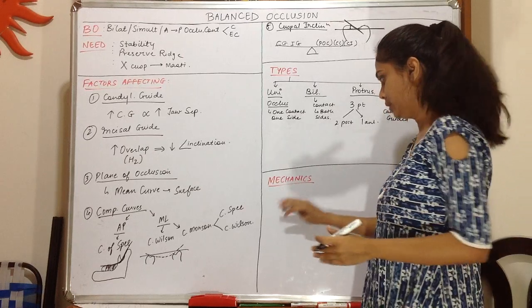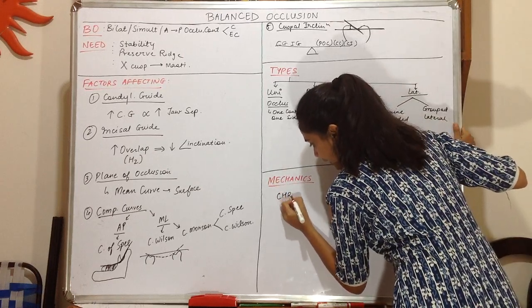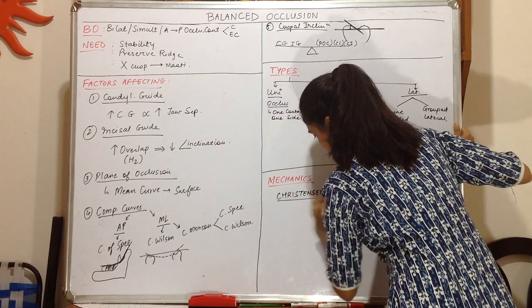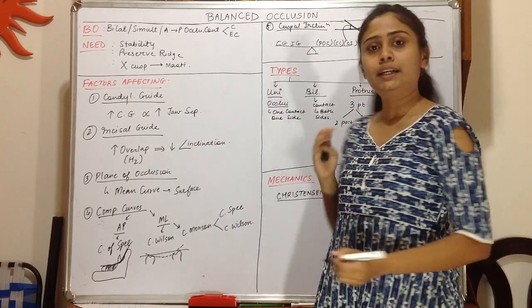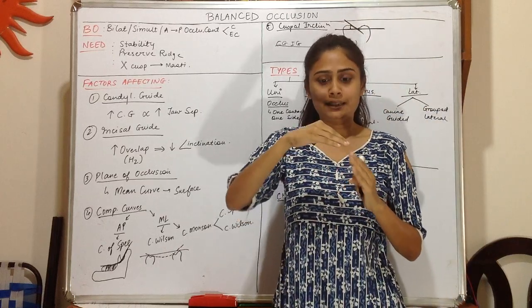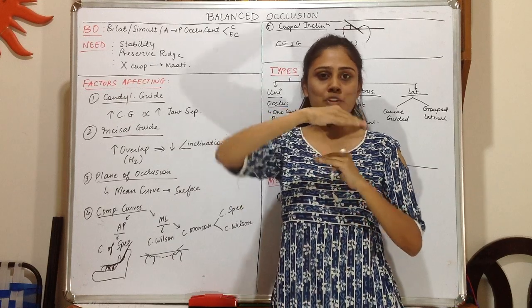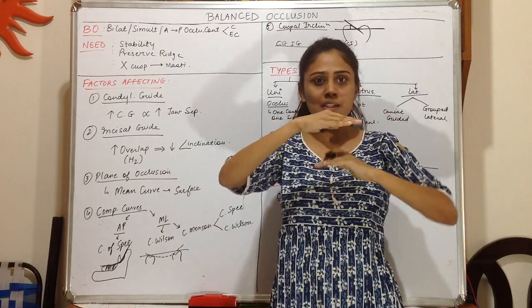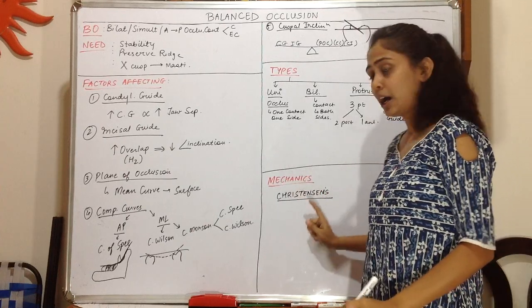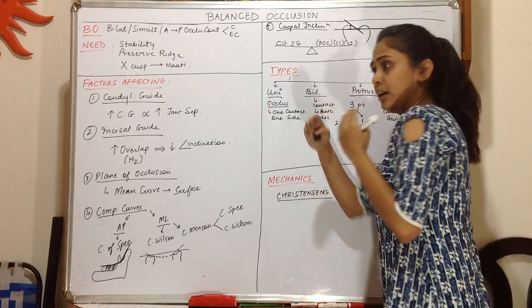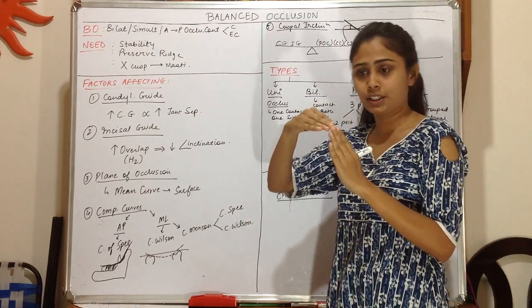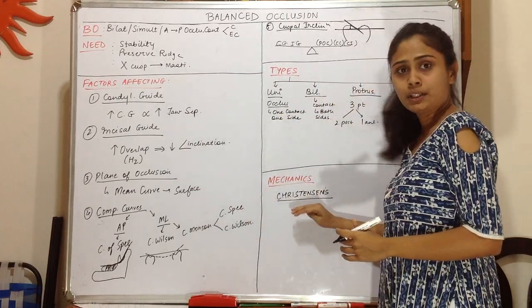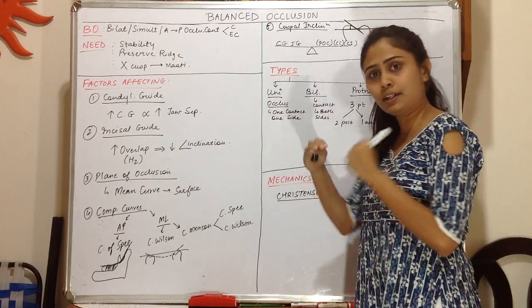Now we come to the mechanics of balanced occlusion. There is a phenomenon known as Christensen's phenomenon. It states that in natural dentition, when the mandible moves forward there is a gap between the posterior upper and lower teeth. However, in dentures this gap is problematic — if only one anterior contact point is present when the mandible moves forward, it leads to a tipping movement, which is harmful to denture stability. Therefore, in dentures we need proper contact both anteriorly and posteriorly.